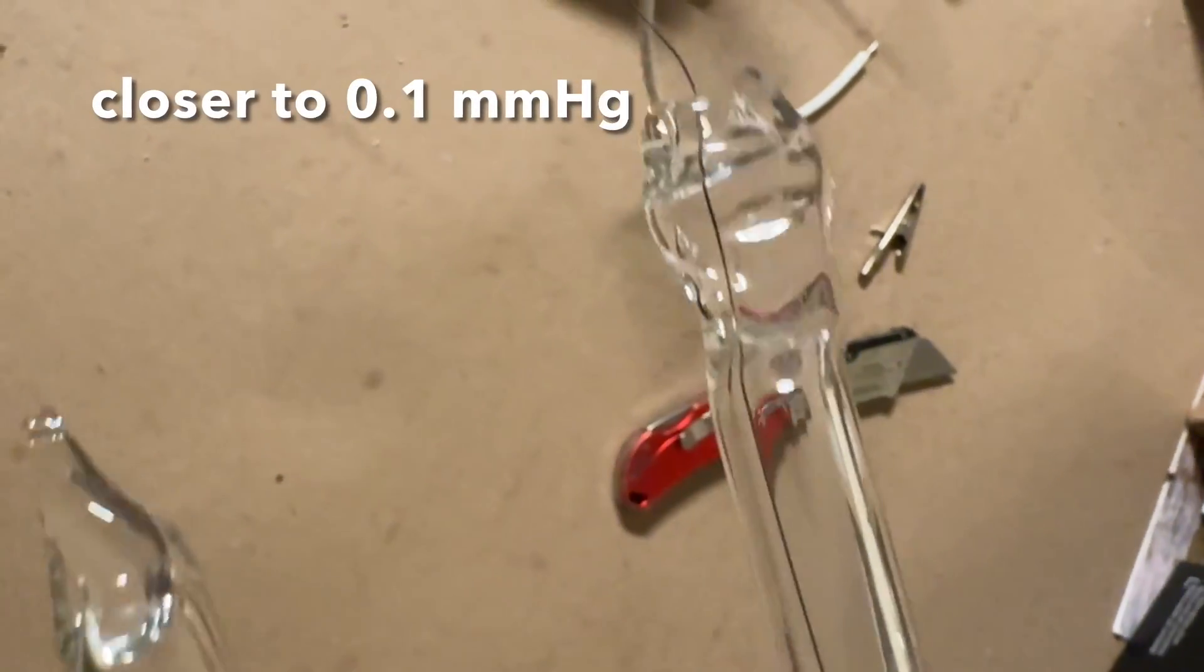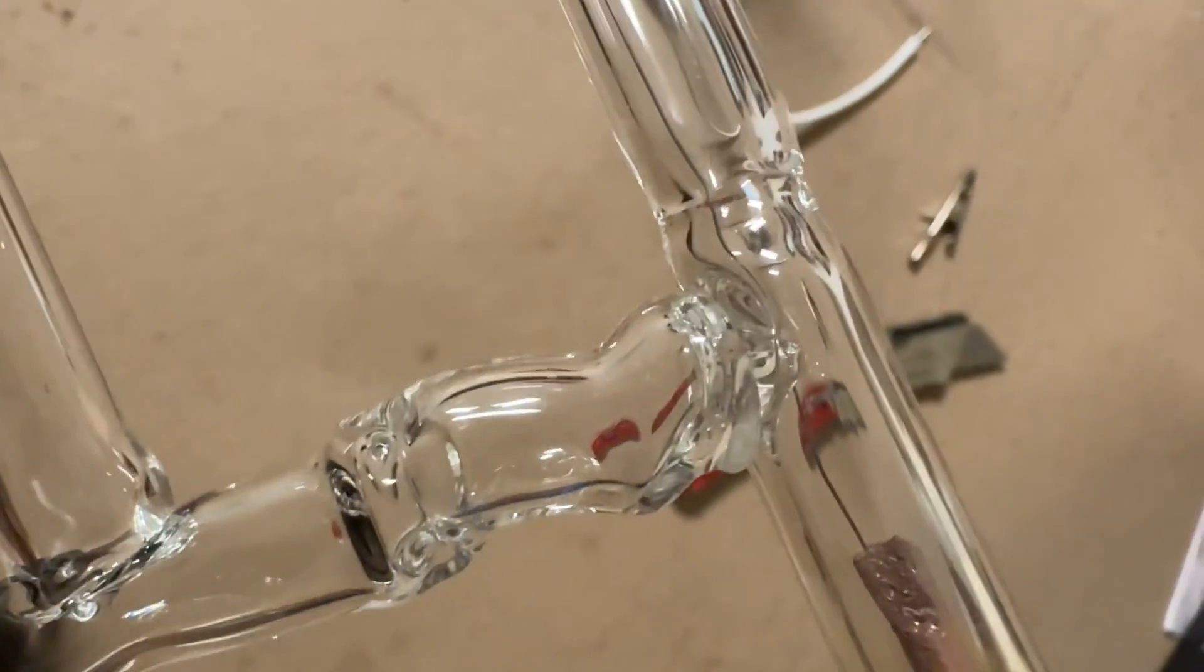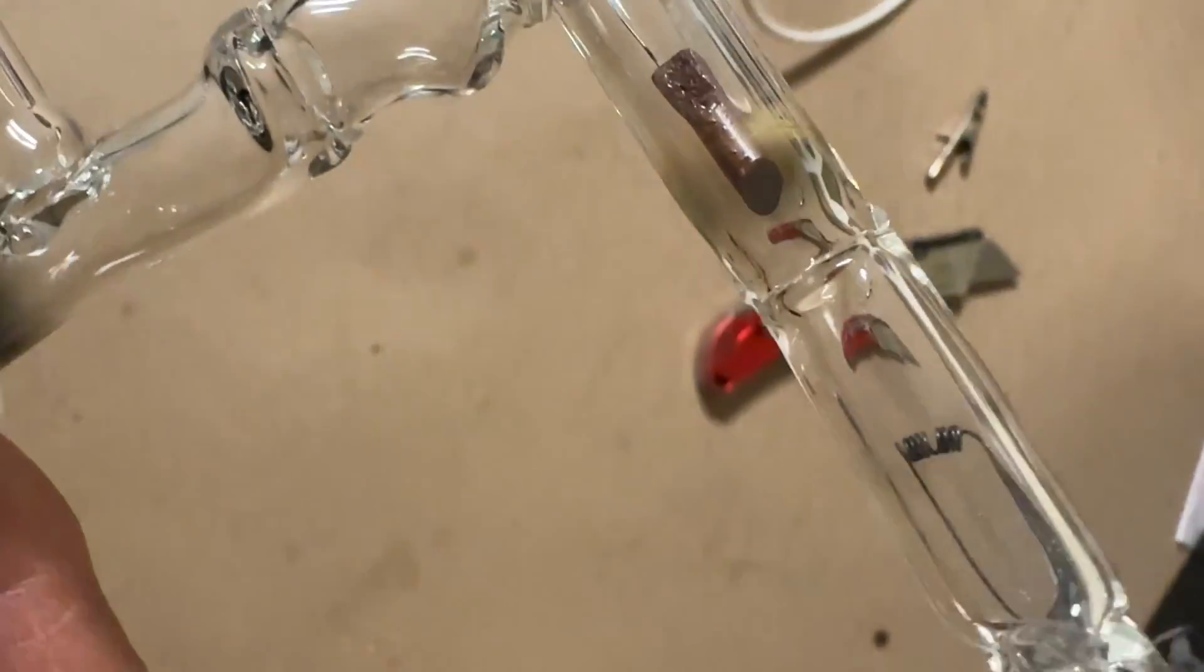Prior to activating the titanium getter, I first had to evacuate all or most of the air out of the tube with a high vacuum pump. I used a two-stage rotary pump for that.